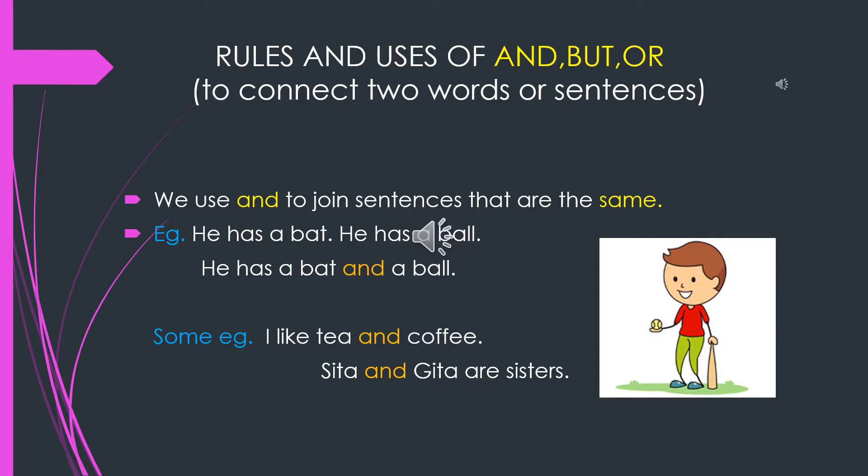We use the word 'and' to join sentences that are the same. For example, the sentence: he has a bat. Another sentence: he has a ball. To join these two sentences we make use of the word 'and': he has a bat and a ball.